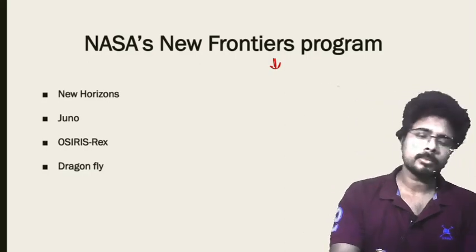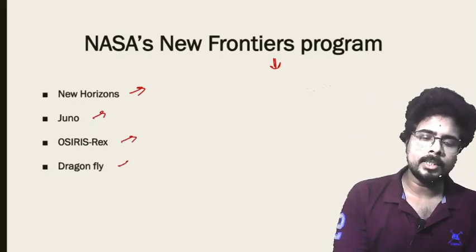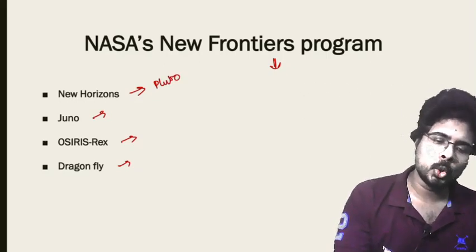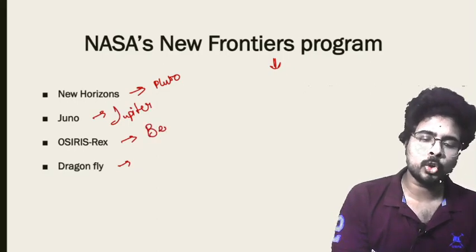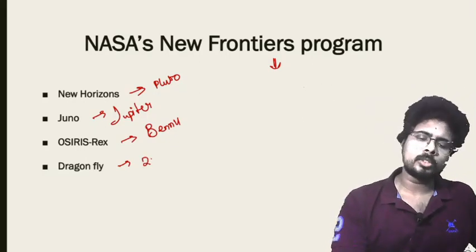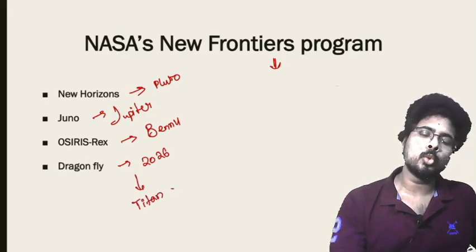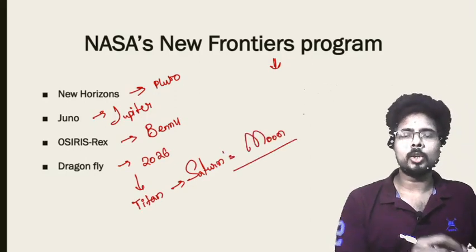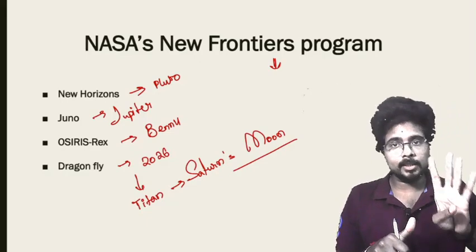The NASA New Frontier Program has four missions: New Horizon, Juno, OSIRIS-REx, and Dragonfly. The New Horizon program is to study Pluto. Juno is to study Jupiter. OSIRIS-REx is to study asteroid Bennu. The fourth, Dragonfly, has not been launched yet — it will be launched around 2026 to study Titan, which is the largest moon of Saturn.